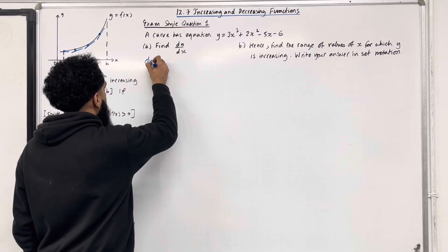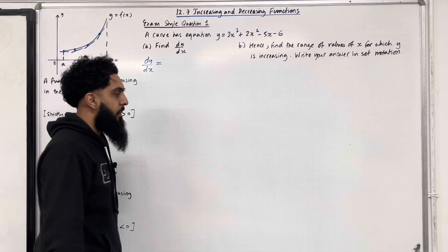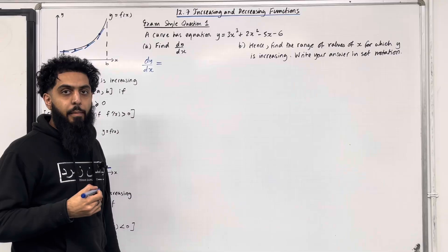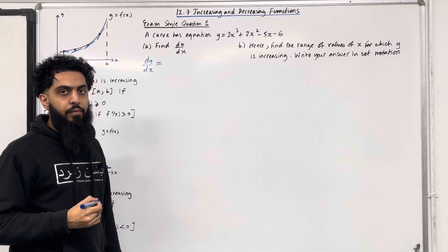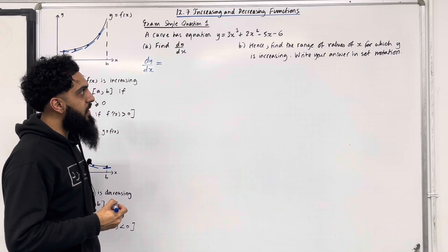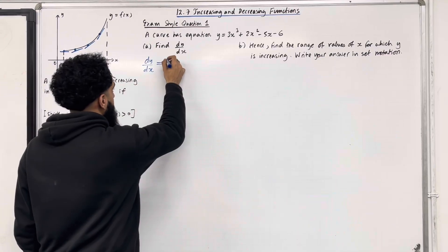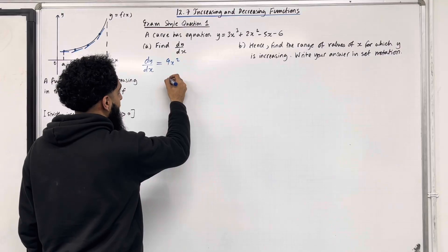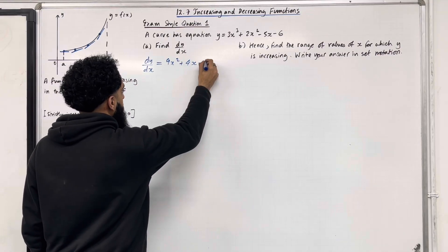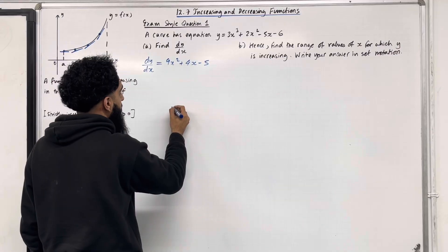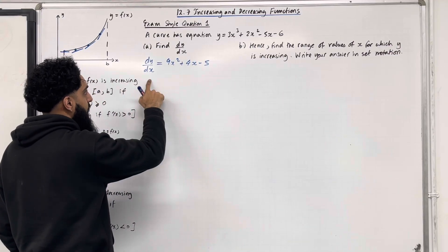In part A we want to work out dy/dx — we are going to differentiate. Simply bring down the power, multiply by the coefficient, and then subtract one from the power. Differentiating term by term: the first term differentiates to 9x², the second term differentiates to 4x, the third term differentiates to -5, and the fourth term differentiates to 0. So dy/dx = 9x² + 4x - 5.